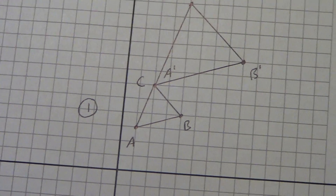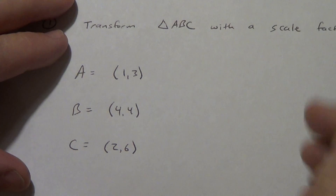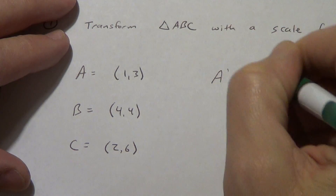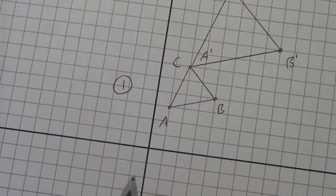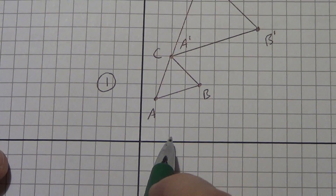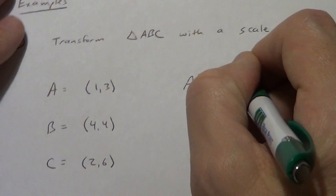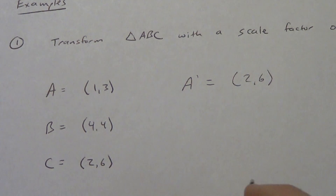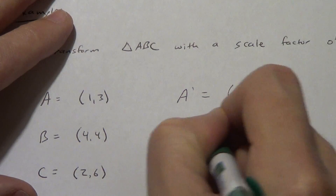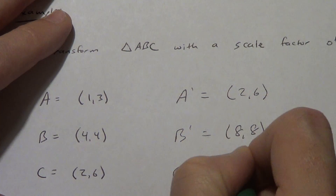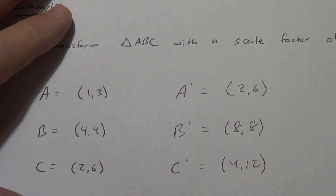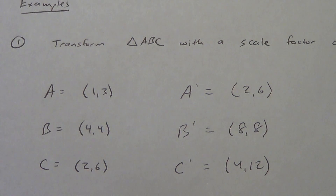Now let's write down those new coordinates. A prime was right 2 and up 6, so A prime is (2, 6). B prime was right 8 and up 8, so B prime is (8, 8). And C prime was right 4 and up 12, so C prime is (4, 12).